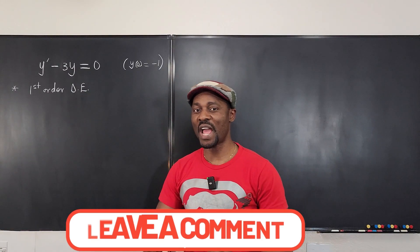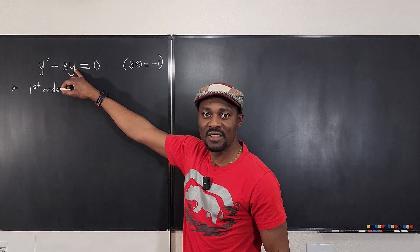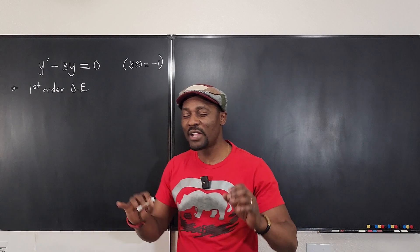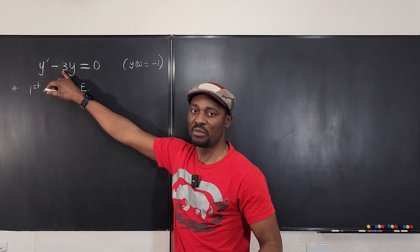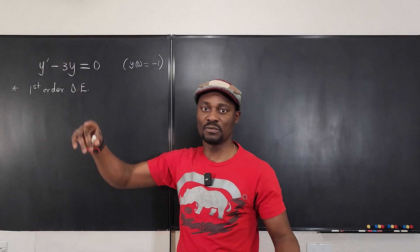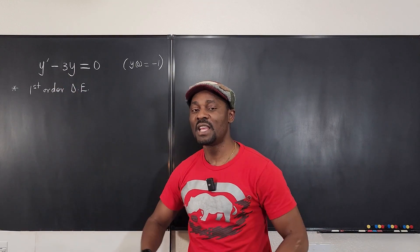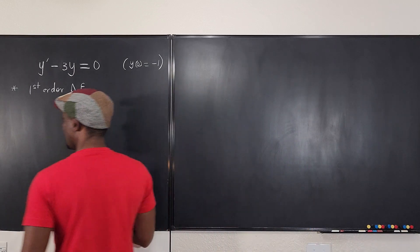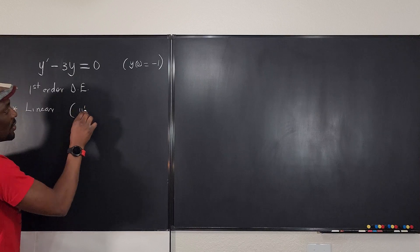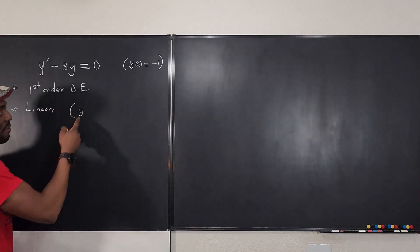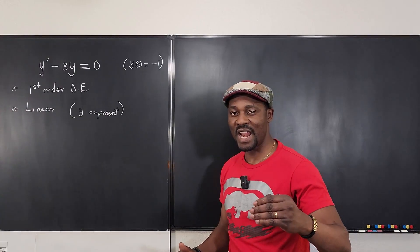The next thing to ask yourself: is there a Y? Yes. What is the exponent on Y? Is Y squared, or a square root of Y, or Y raised to some rational exponent? No — it is just Y. Because Y is standing by itself with a power of one, this is a linear differential equation. That's the second characteristic: it's linear.